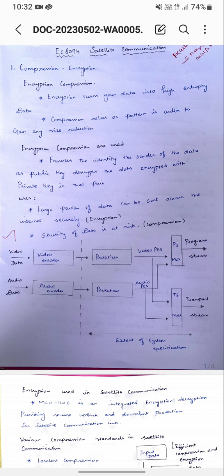Encryption turns your data into high entropy data. Compression relies on patterns in order to gain size reduction. Encryption and compression together ensure the identity of the sender of the data, using a public key, and decrypt the data encrypted with a private key.